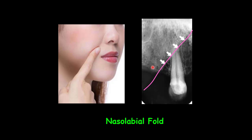In edentulous patients, where few anatomic landmarks are demonstrated, the nasal labial fold will be useful in identifying the site of the maxilla on periapical radiographs. On this periapical radiograph, this radiopaque line is from the nasal labial fold on this side of the patient — so this would be the distal side of our periapical radiograph and this would be the mesial side.